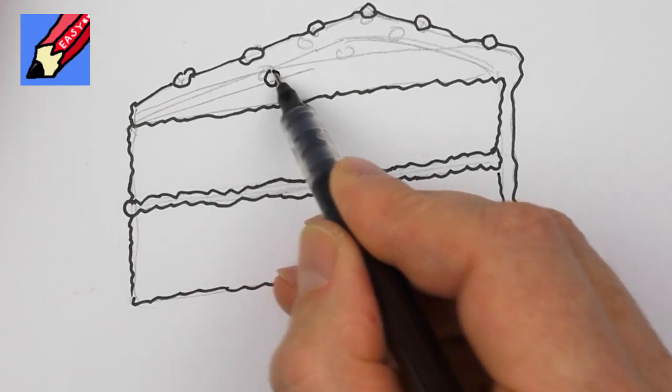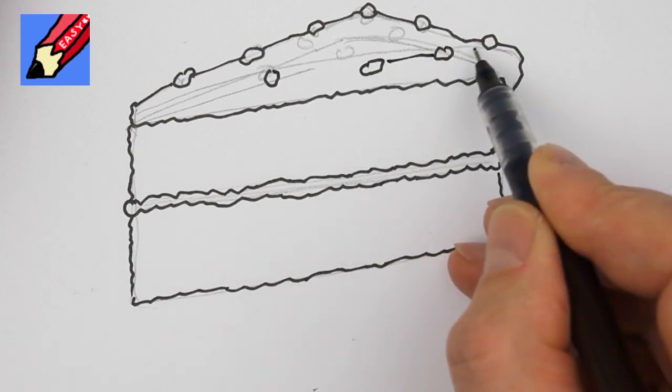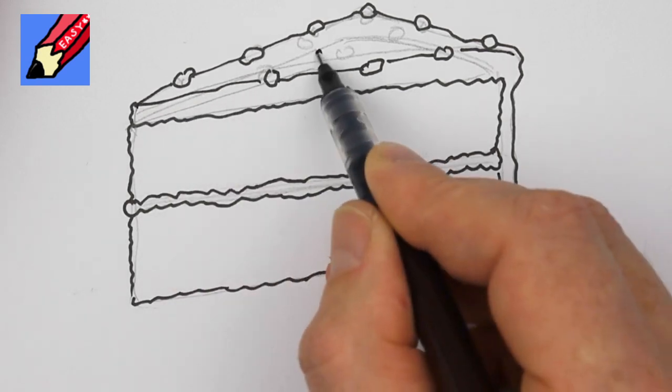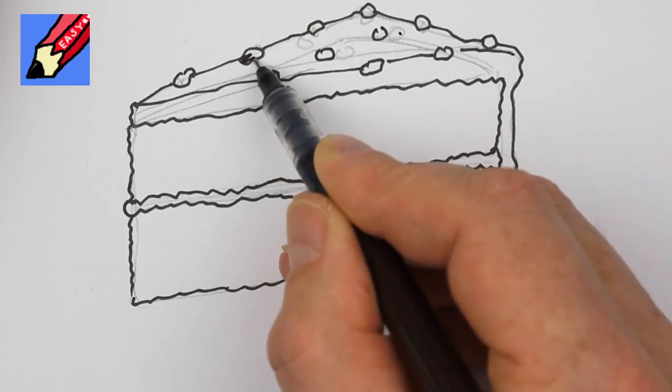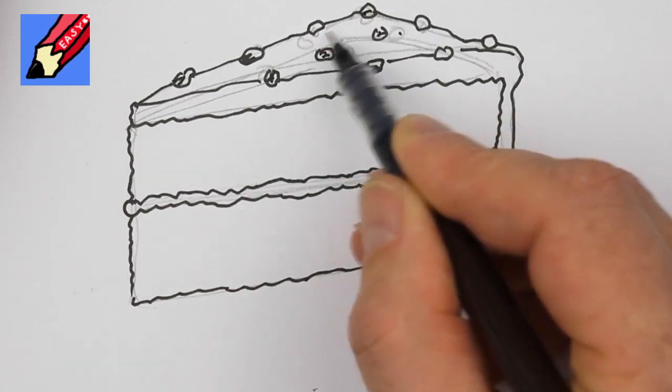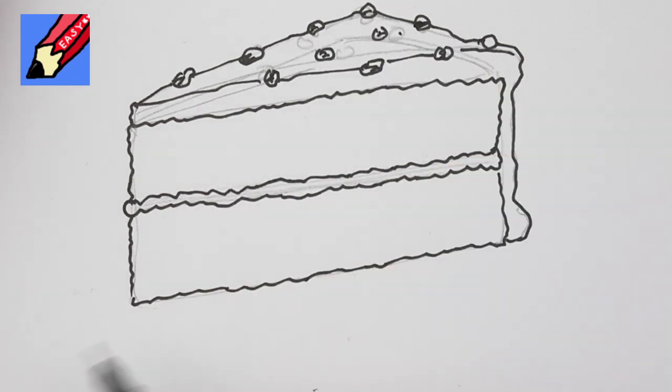We're going to have more bits of chopped walnuts or whatever they are coming along there like that and you can put some more in and they might need a little bit of shading or something like that just to make them look more obvious.